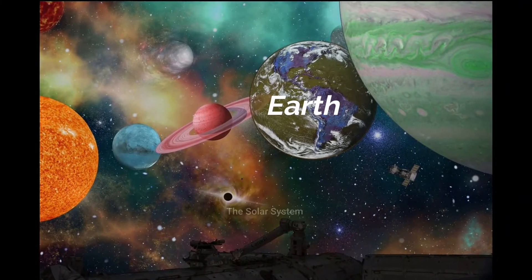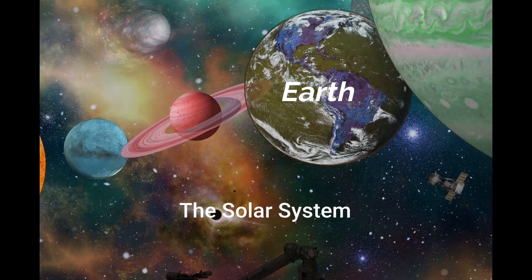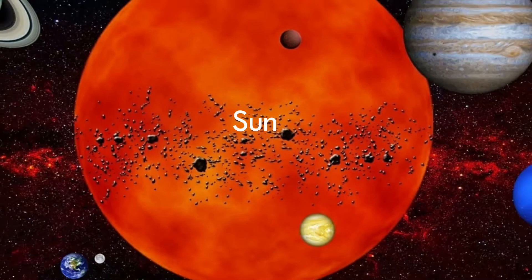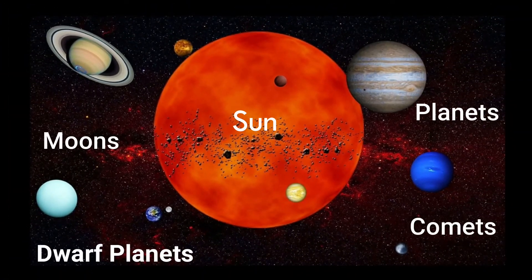The solar system is a place in space where our Earth exists, along with neighboring planets, dwarf planets, comets, moons, asteroids, and the Sun.